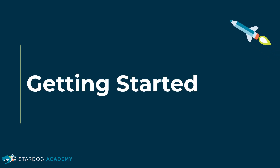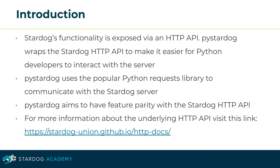This section is about getting started. Stardog's functionality is exposed via an HTTP API. PyStardog wraps the HTTP API to make it easier for Python developers to interact with the server. PyStardog uses the popular Python requests library to communicate with the Stardog server. PyStardog aims to have feature parity with the Stardog HTTP API. For more information about the underlying HTTP API, visit the documentation link.